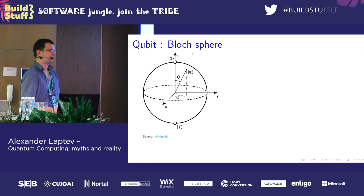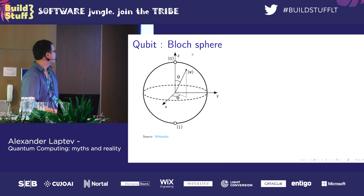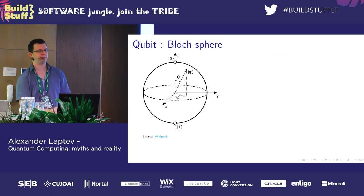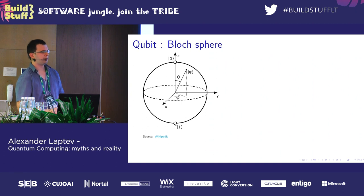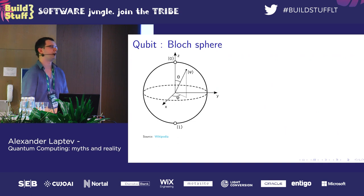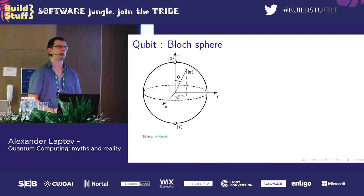The most interesting part of the qubit is superposition. It happens when the state of the qubit is at any point on the surface of this sphere. In this case, when we measure the qubit, we don't know exactly which result we will get.